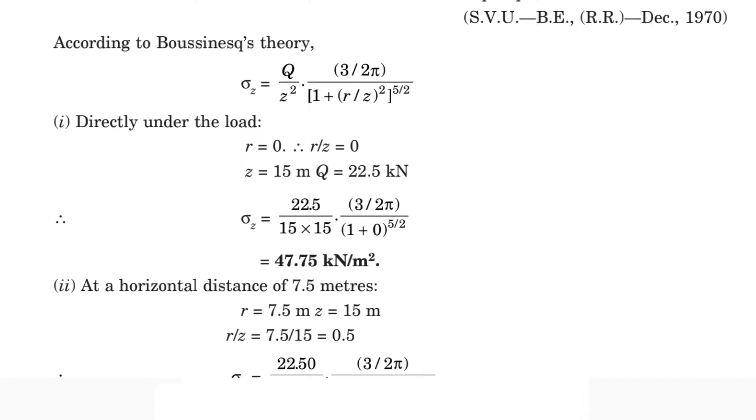Sigma z equals 22.5 divided by 15 times 15, times 3 by 2 pi, divided by [1 plus 0] to the power 5 by 2. Solving this, we get the answer of 47.75 kN per meter squared.